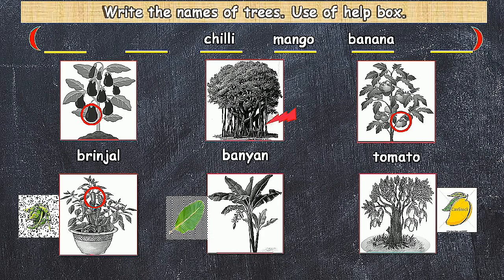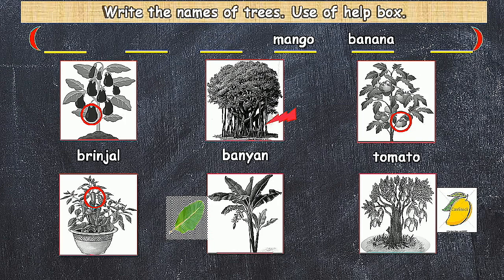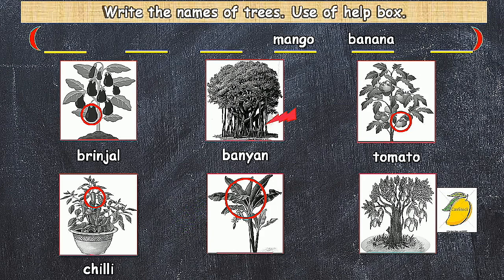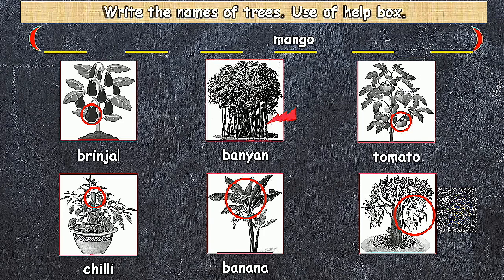That is one of the vegetables — tomato. Next, another tree name is very easily identified — chili. The next picture is a banana tree. The last one is very easy to identify based on the fruit — that is a mango tree.